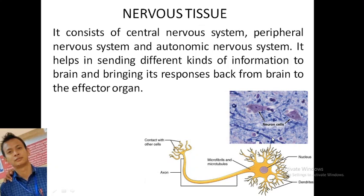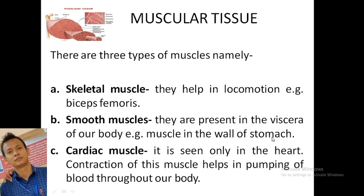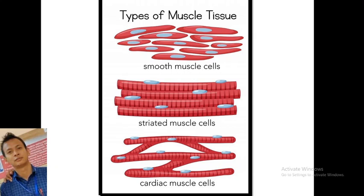In the muscular tissue picture, there are three types of muscle: skeletal muscle, smooth muscle, and cardiac muscle. Skeletal muscles are located in areas like the biceps and are responsible for locomotion. Smooth muscles are present in the walls of visceral organs such as the stomach. Cardiac muscle is seen only in the heart, which contracts to pump blood throughout the body. Under the microscope, smooth, skeletal, and cardiac muscles each have a distinct appearance.